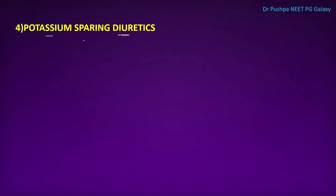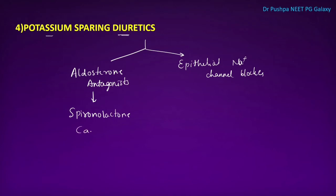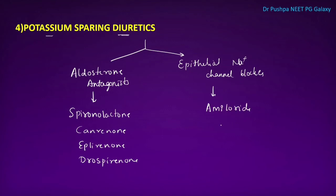The next class is potassium-sparing diuretics, which are of two types: aldosterone antagonists and epithelial sodium channel blockers. Examples of aldosterone antagonists include spironolactone, canrenone, eplerenone, and drospirenone. Examples of epithelial sodium channel blockers include amiloride and triamterene.